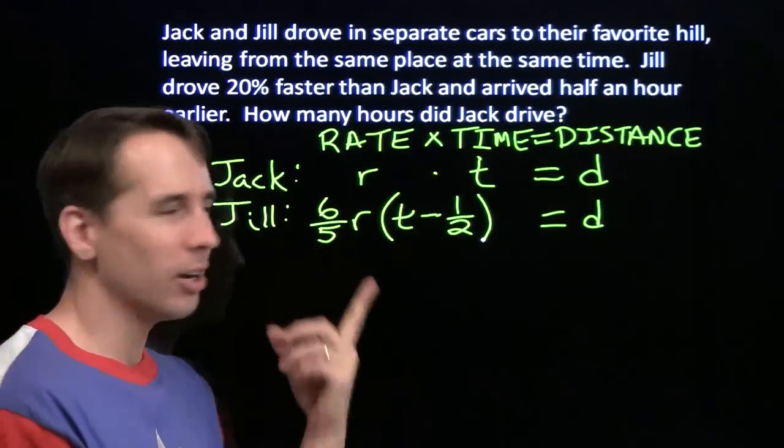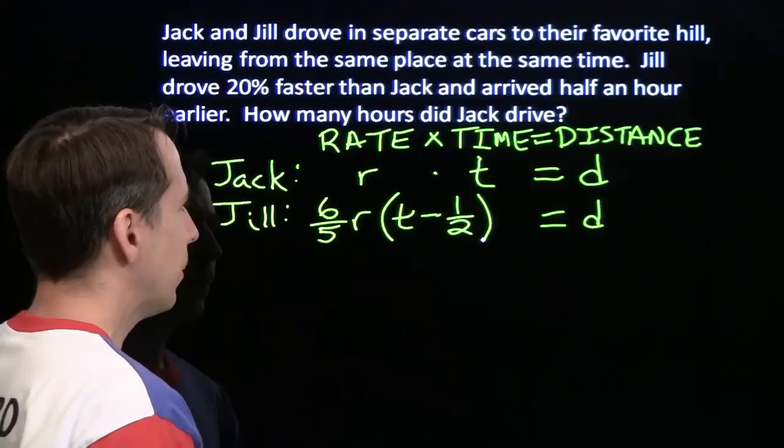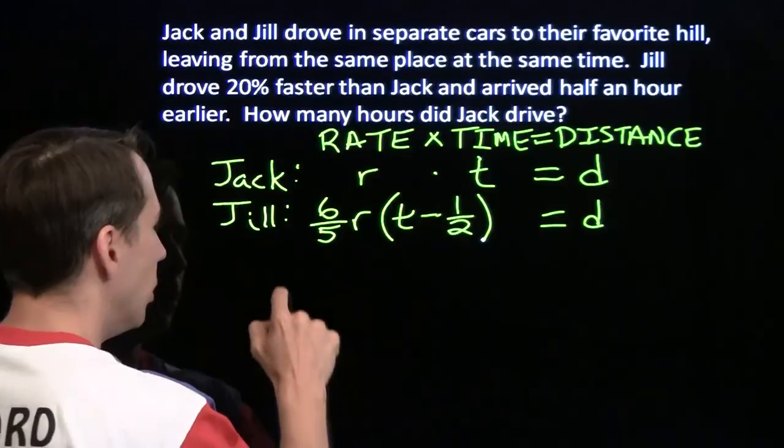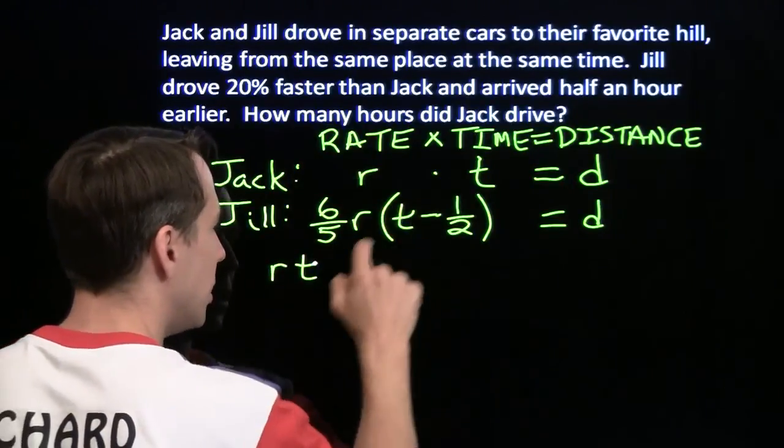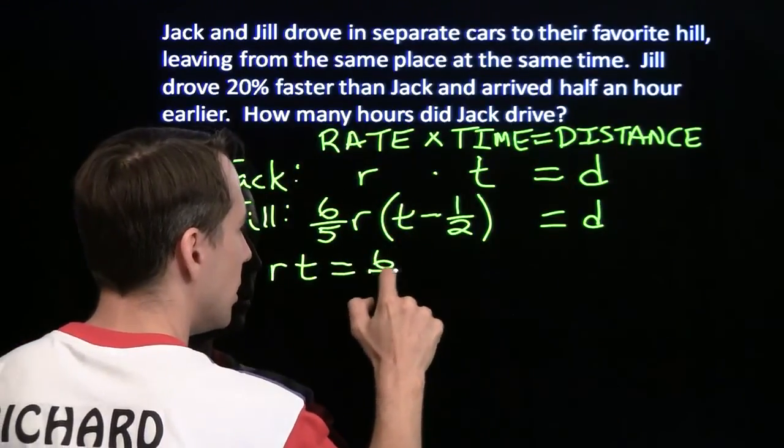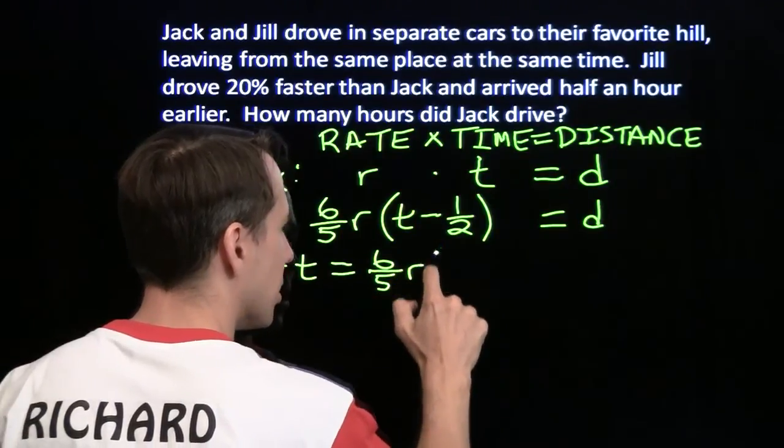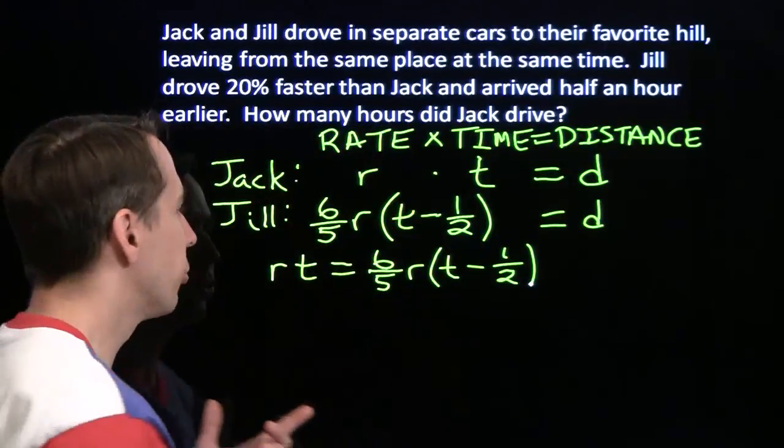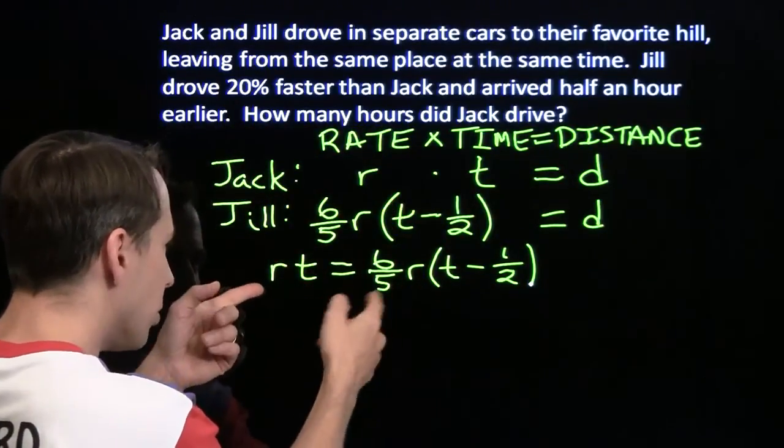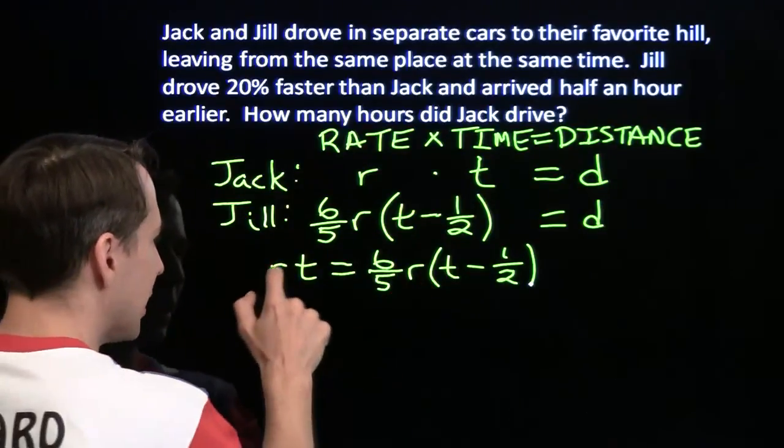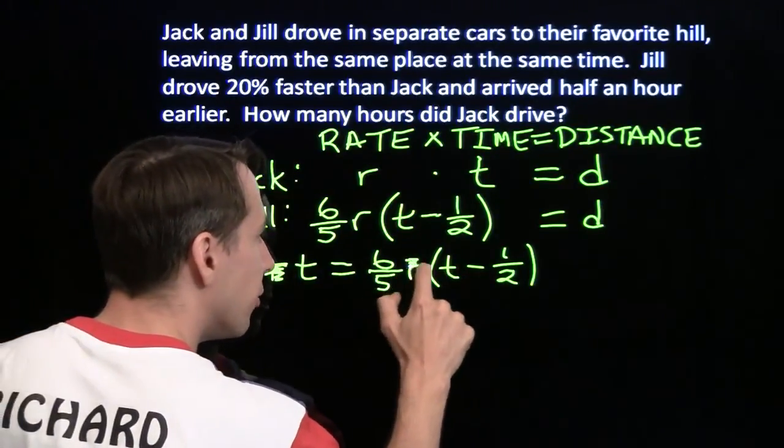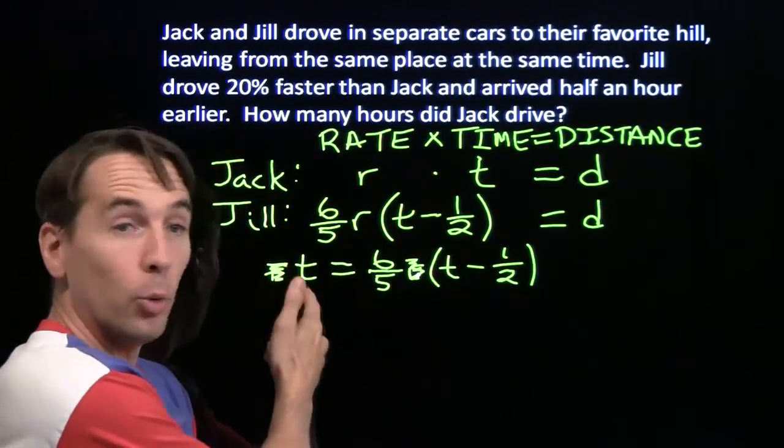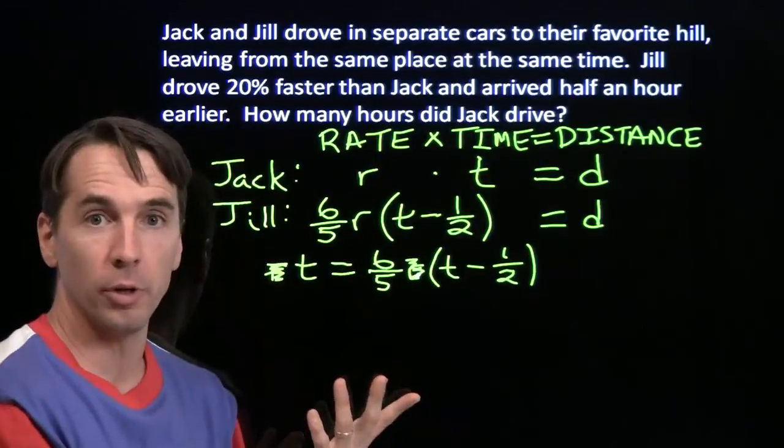We didn't need any new variables to write down Jill's equation. But now we have two pretty scary equations. Well, the right-hand sides are the same, so the left-hand sides have to be equal. So we can set rt equal to six-fifths r times the difference t minus one-half, and we've at least gotten rid of one of our variables. Now, r is not zero, so we can divide both sides by r to cancel it out. Now we've gotten rid of another variable, so we're left with just one variable. And better yet, it's the variable we want. T is Jack's time, which is what we're looking for in this problem.